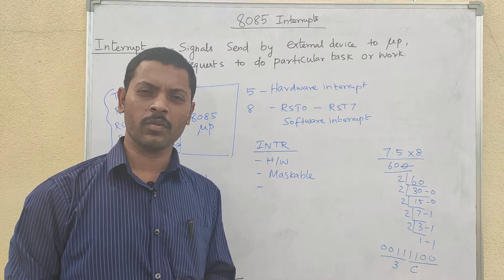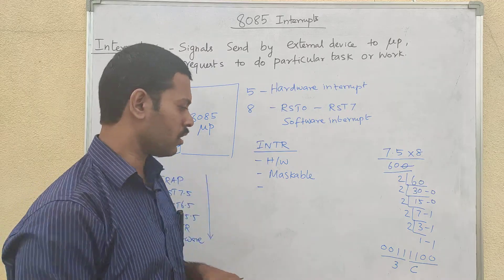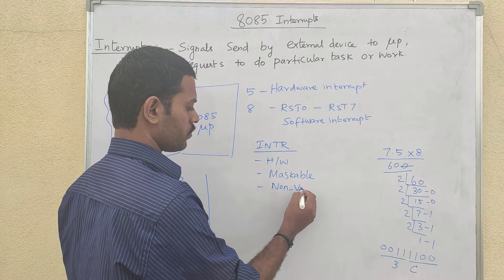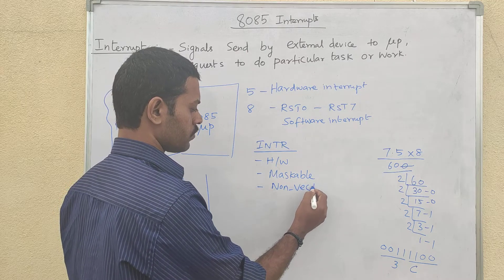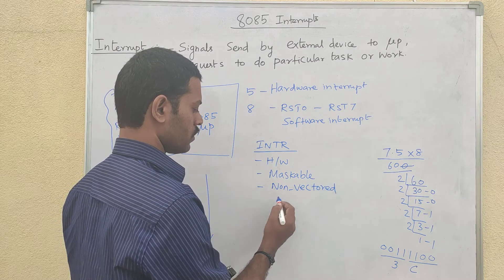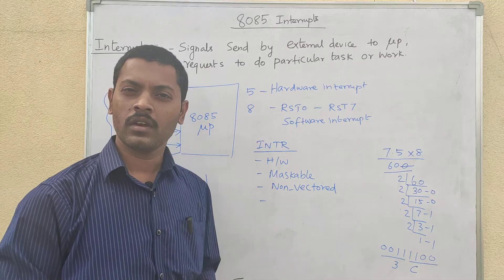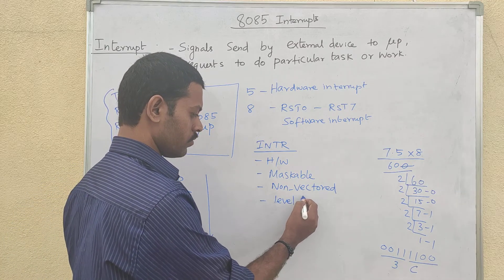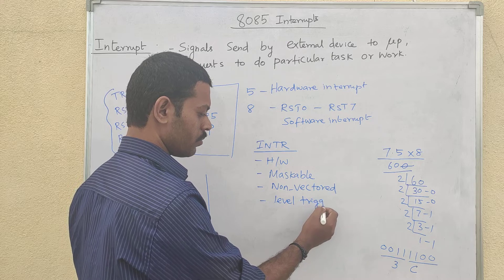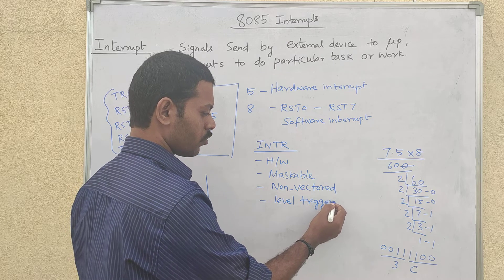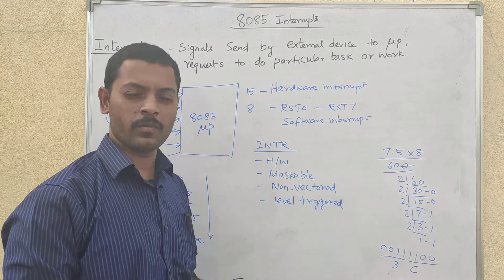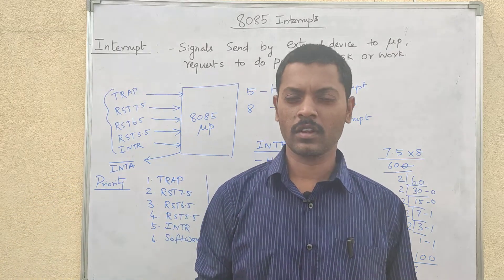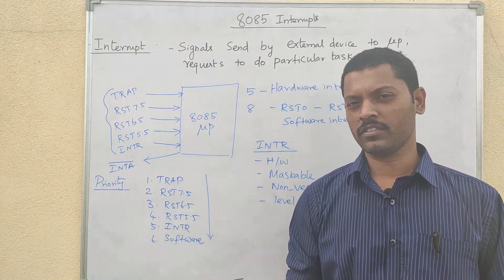For INTR, the ISR address comes from the external device, which is why INTR is a non-vectored interrupt — the address is not fixed internally. INTR is also level triggered. This covers the 8085 microprocessor interrupts and their functionality.